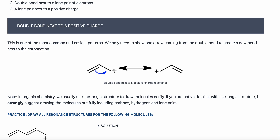This carbon did not have enough electrons — now it has electrons, so it's neutral. And this carbon will be positively charged because it lost a bond. Whenever you see a double bond next to a positive charge, you can apply this resonance pattern.